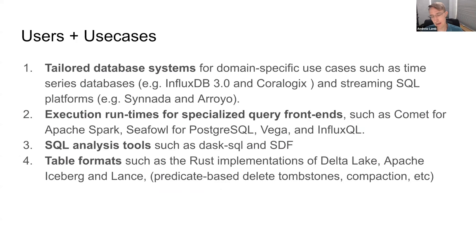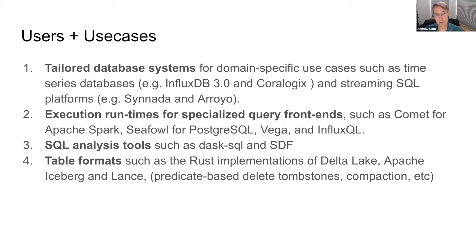There are various use cases: InfluxDB and several other time series databases like CnosDB and RepoDB, streaming platforms, and other database-type systems. Some people use just pieces of DataFusion — for example, Comet is an accelerator for Apache Spark that basically swaps out the execution engine, and there are equivalent ones for Postgres built by a company called CedarDB.